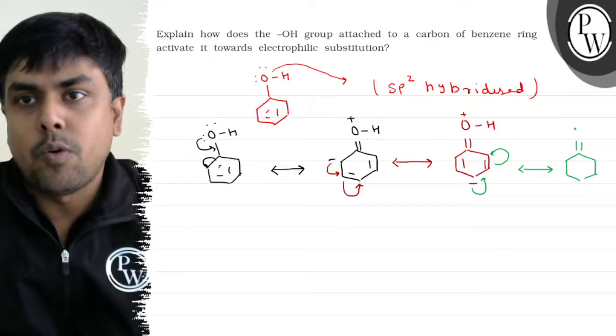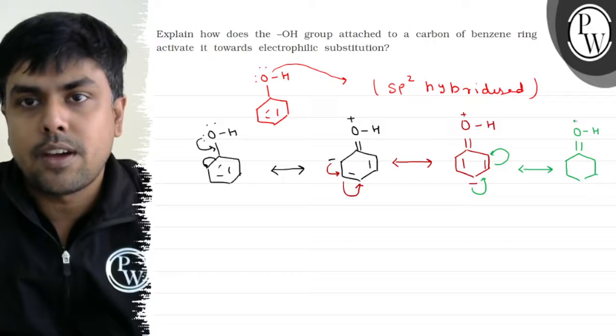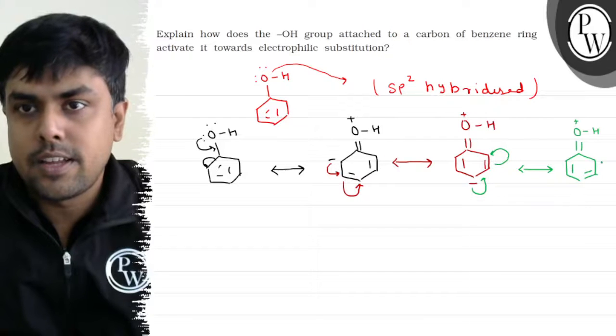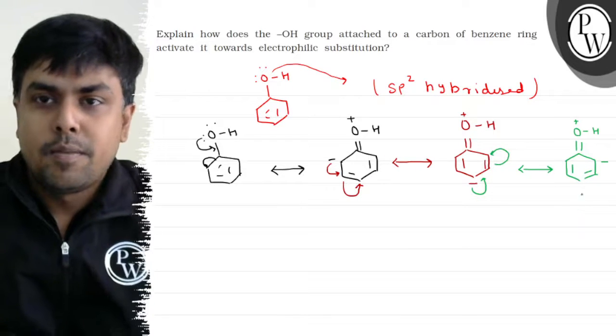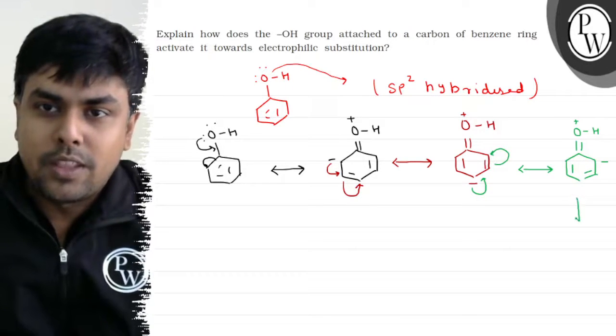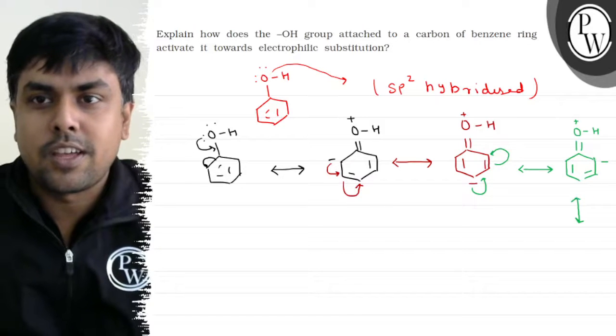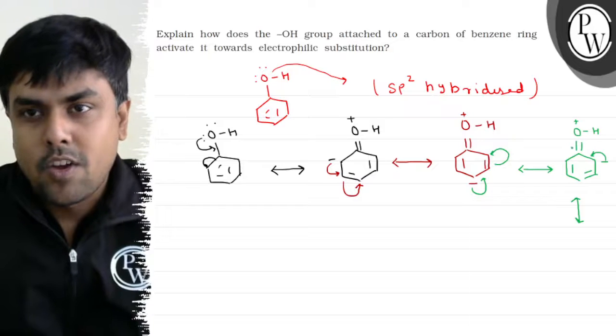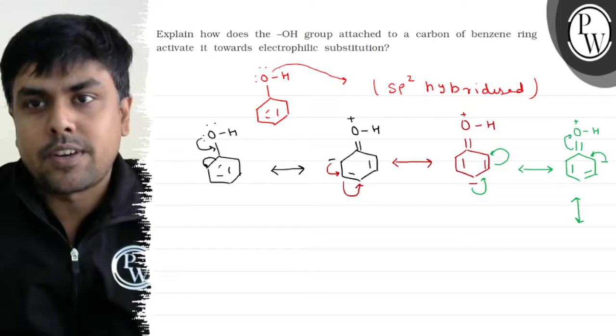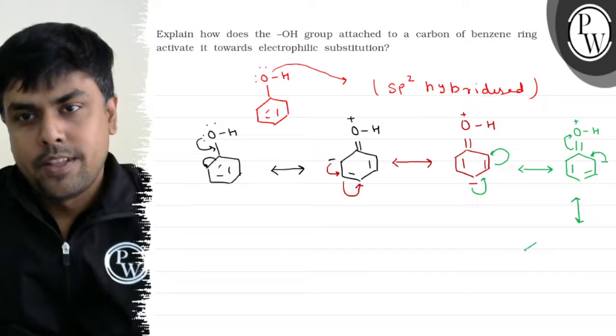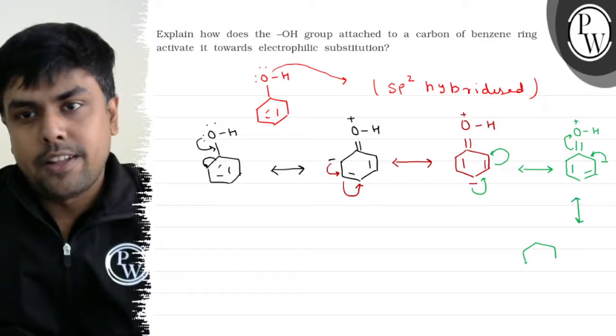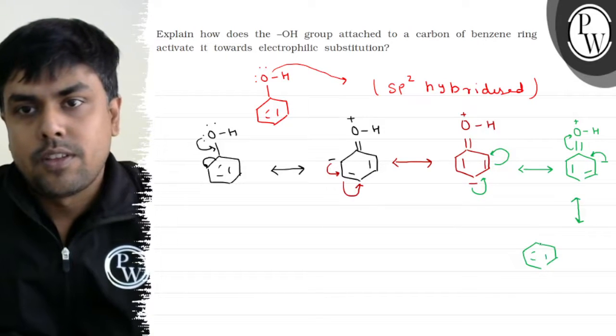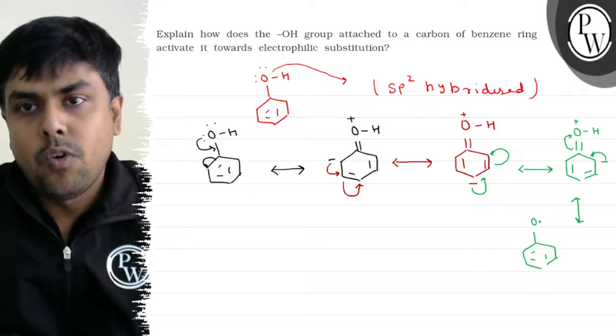Double bond, O. O has positive charge. Now if I talk about the next resonating structure, what will happen? This negative charge will delocalize and this double bond will again shift to oxygen. So I'll get the final resonating structure like this. O, H.